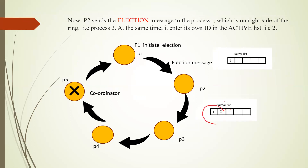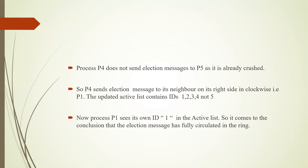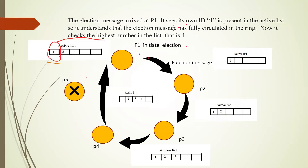P2 sends the election message to P3 and adds its ID to the list — the list now contains IDs 1 and 2. P3 sends the election message to P4, and the list now contains IDs 1, 2, and 3. Process P4 does not send the election message to P5 since it is crashed; instead, P4 sends it to P1 in the clockwise direction. The updated active list contains IDs 1, 2, 3, and 4. Process P1 then sees its own ID, 1, in the active list, concluding that the election message has fully circulated the ring.